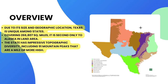Texas is a very large state. Due to its size and geographic location, Texas is unique among all the states. It covers 266,000 square miles and is second only to Alaska. It's a massive state as a landmass. The state has an impressive topographic diversity, including 91 mountain peaks that are a mile or more high.